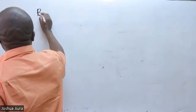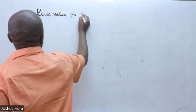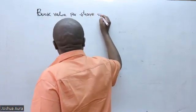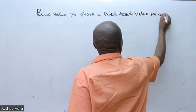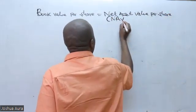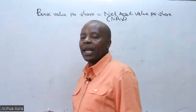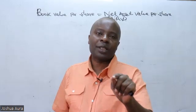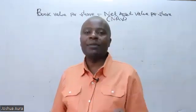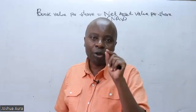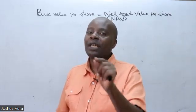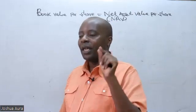Book value per share is the same as net assets value — what we call the net assets value per share, which we should be pronouncing as NAVPS. The formula is very easy: take the total assets, subtract any fake assets (fake assets are intangible assets), subtract any current liabilities, subtract non-current liabilities, and don't forget to subtract preference share capital if it is given, to arrive at the net assets value.